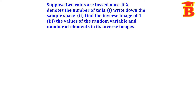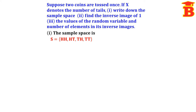Given that two coins are tossed, we have to write the sample space. When two coins are tossed, there are four possibilities. We write the sample space S = {HH, HT, TH, TT}.